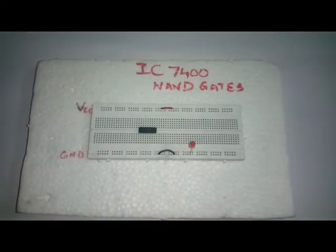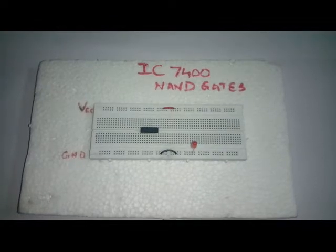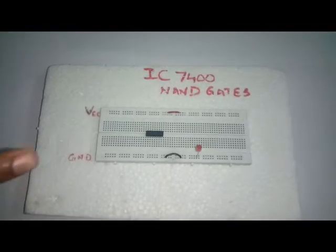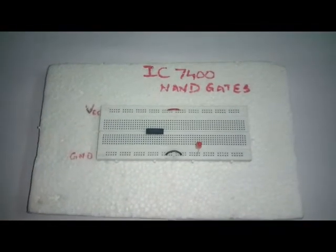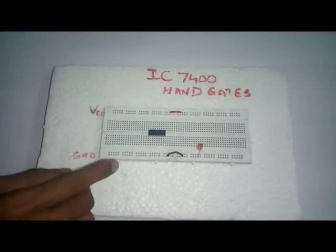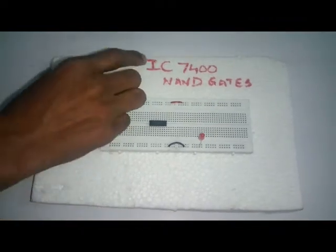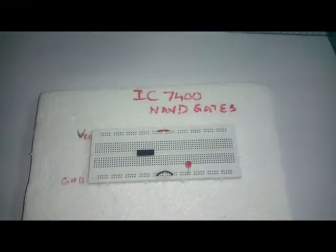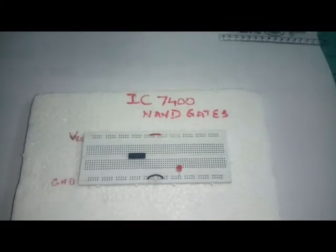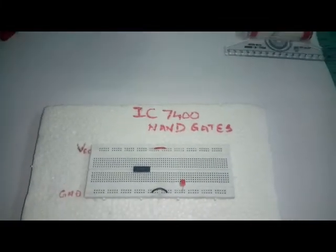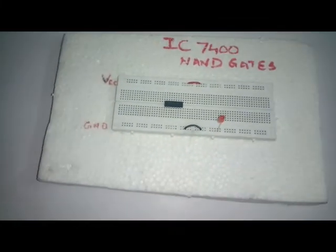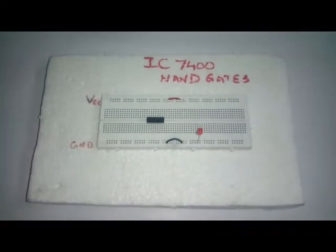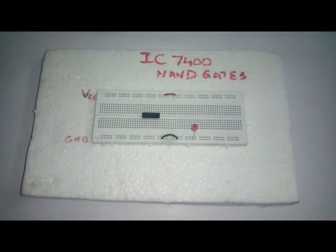Hi fellas. Today we are going to see how to construct a NOT gate using IC7400 NAND gate. I will be explaining about the NAND gate. The IC I have used here is IC7400 Quad NAND gate. The reason for its name is that it has 4 NAND gates in it. Now we will see its pin diagram.